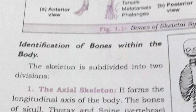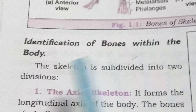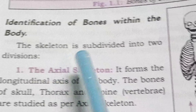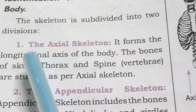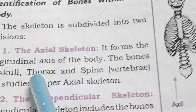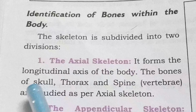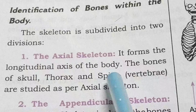Next: identification of bones within the body. The skeleton is subdivided into two divisions — the axial skeleton and the appendicular skeleton. The axial skeleton forms the longitudinal axis of the body.